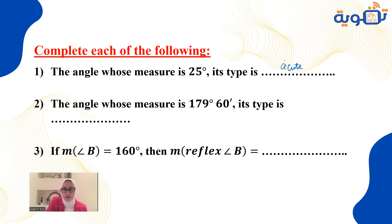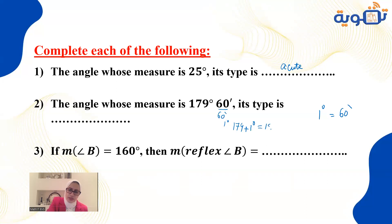The angle whose measurement is 179 degrees and 60 minutes — every degree equals 60 minutes, so 60 minutes divided by 60 gives one degree. That means 179 plus 1 degree equals 180 degrees. What is the type? It's a straight angle.